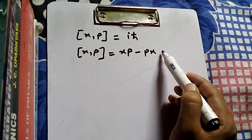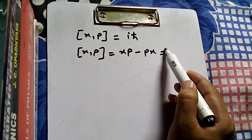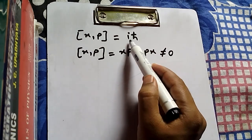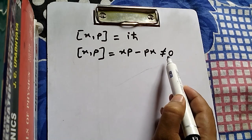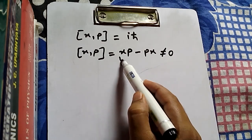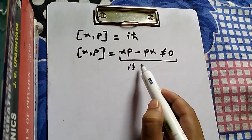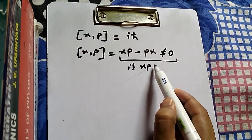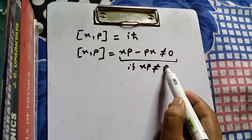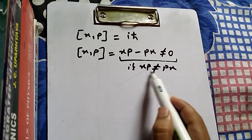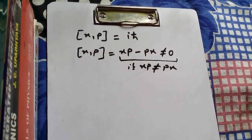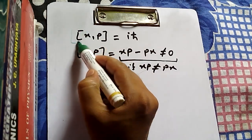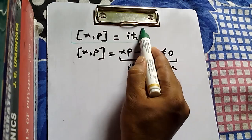Now iℏ is a nonzero value. The commutation of two operators is actually equal to XP minus PX. Since this value is iℏ, which is nonzero, we write that this relation is nonzero. This relation is nonzero only if XP is not equal to PX — that is the key sense of this relation.